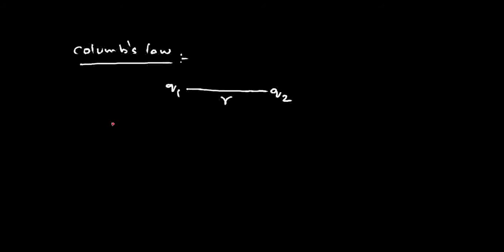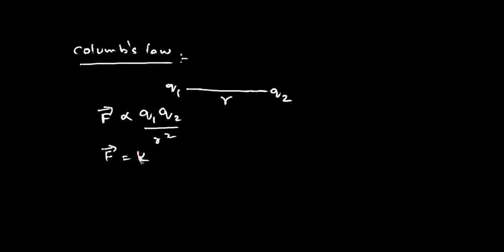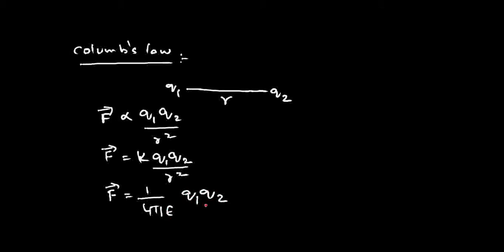I repeat: the force of attraction or repulsion between two point charges is proportional to the product of the magnitude of these two charges and inversely proportional to the square of the distance between them. So, force F is proportional to Q1 Q2 by R square. If I remove the proportionality, I replace it with a constant K: F = K Q1 Q2 / R².